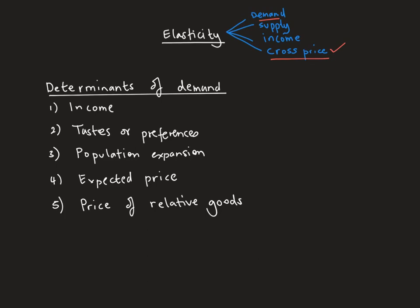Cross price elasticity of demand focuses on the price of relative goods. If you recall from the video on the demand curve, we focused on four determinants of demand: income, taste or preferences, population expansion, and the expected price. In this video we'll focus on the fifth one — the price of relative goods — which takes into account the difference between a substitute good and a complementary good.